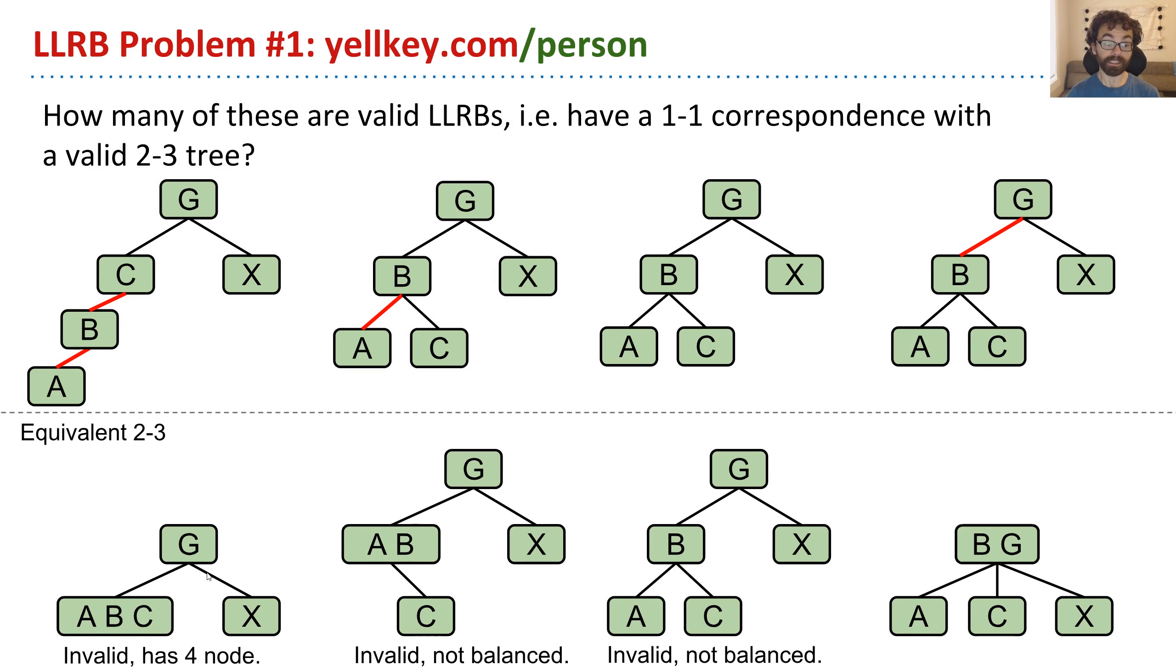So the reason it's invalid is because of the fact that A, B, and C, all being together, that's a 4 node. So even though this is a tree which only has black and red links, and all the red links lean left, it is not a valid LLRB, because there's no way you could get this 2-3 tree. If you had this 2-3 tree, the B would immediately split and move up. So this is not a valid state. It happens temporarily, but we don't consider it to be a valid 2-3 tree. And so this up here is not a valid LLRB.